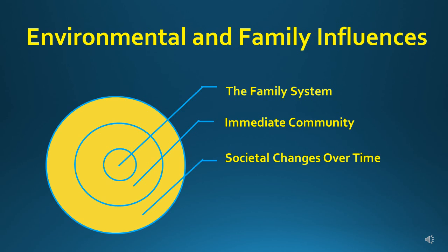The middle circle is the immediate community, which includes the school environment, extended family members, friends, or community members. One example could be if a child visits his Italian grandparents every summer in Italy — his grandparents and everyone in Italy only speak Italian, so the child spends the entire summer speaking in Italian. Another example: a former client of mine would go to a Chinese church every Sunday, sing Chinese songs, read a Bible written in Chinese, and listen to Chinese sermons. These short or long exposures to language in different environments are critical language experiences and play an important role in the child's language development.